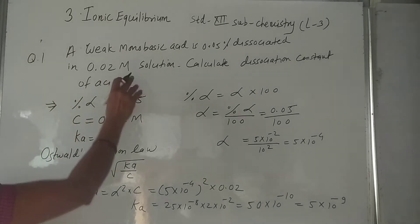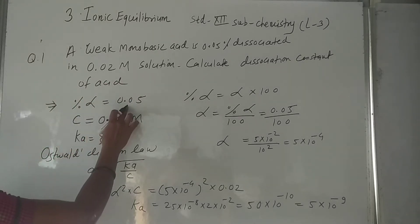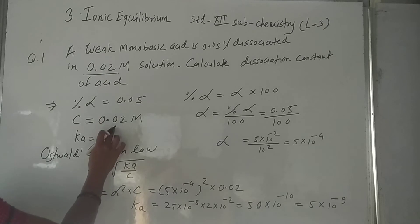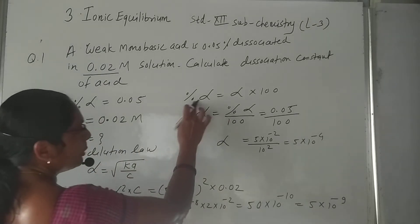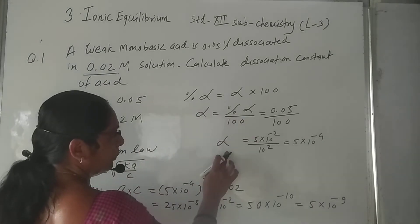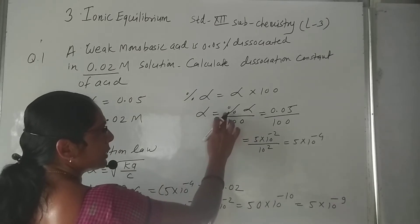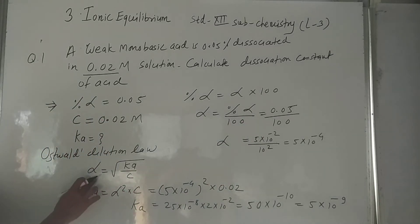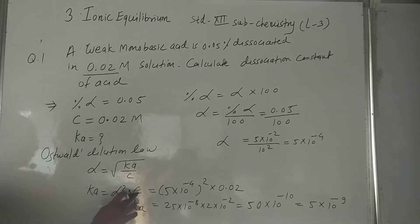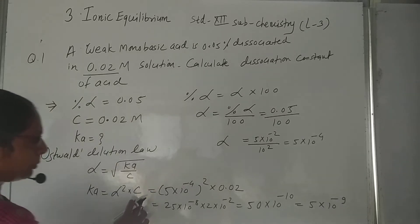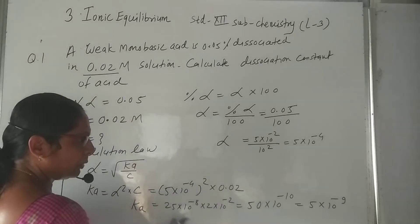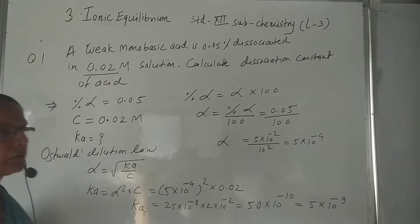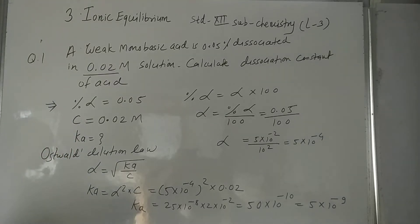To recap: percentage dissociation is given, and concentration C is given. From percentage dissociation, find alpha = percentage / 100. Then apply the formula K = α²C, substituting the value of alpha to get the answer, which is 5 × 10⁻⁹.